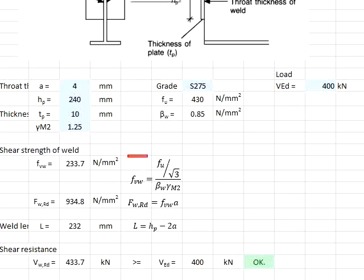Substitute the relevant value into the formula, you get FVW equals to 233.7 Newton per mm square. It is later being multiplied with the drop thickness equals to 4 mm.